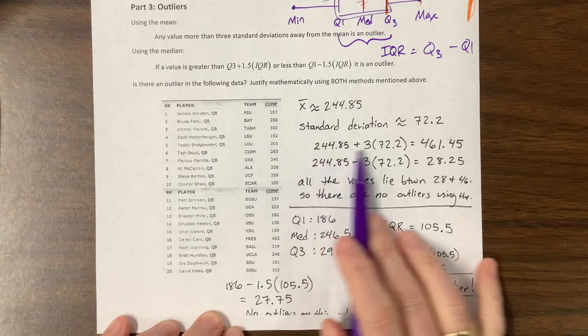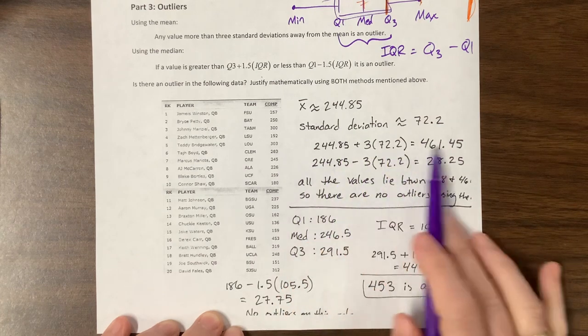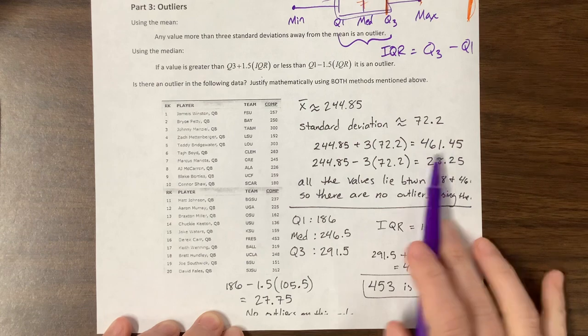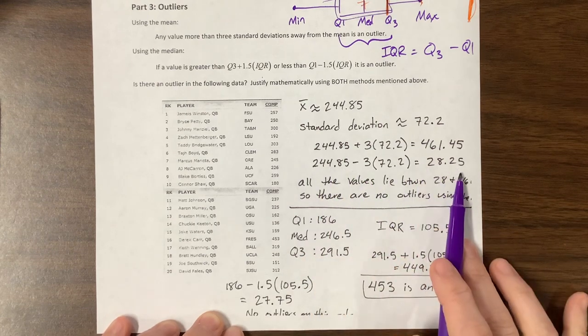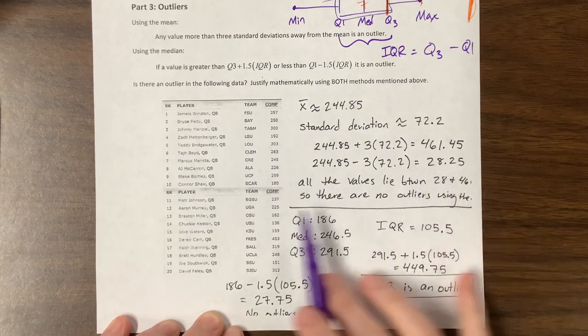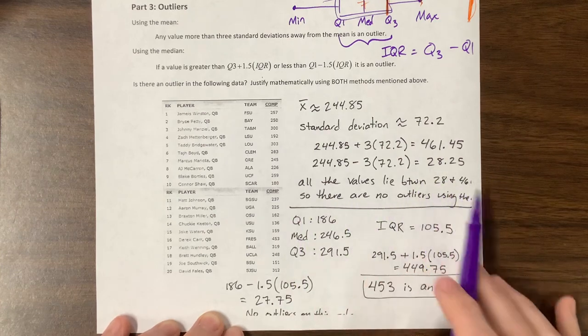And then I can take this mean and add three times the standard deviation, and then I get this value. I can take the mean and subtract three times the standard deviation and get this value. And if we notice, well my notes indicate that all the values lie between those two.